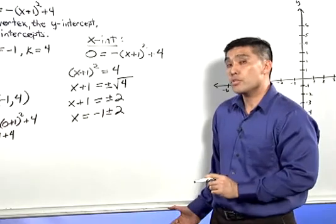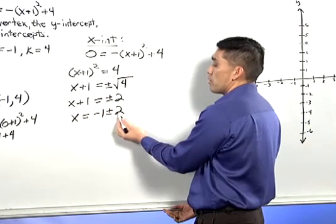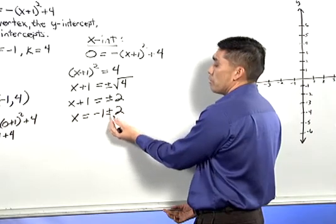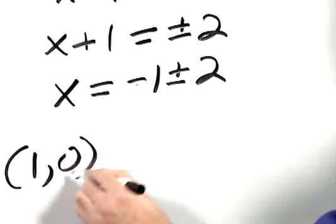Now recall that there's two solutions here. The first is x equals negative 1 plus 2. Well, negative 1 plus 2 is 1. So our first x-intercept is 1, 0.